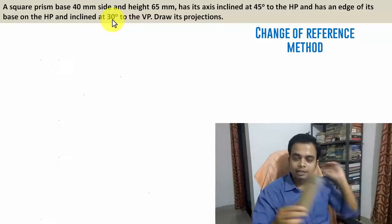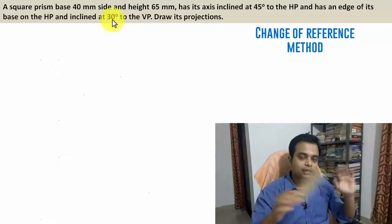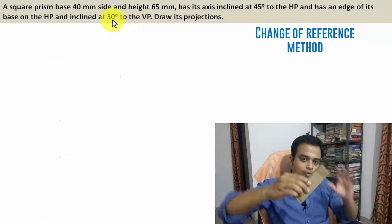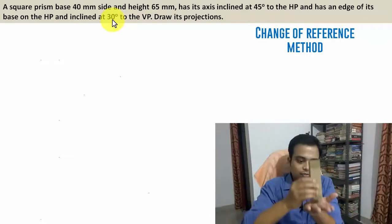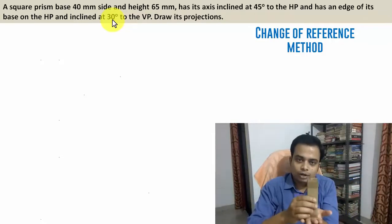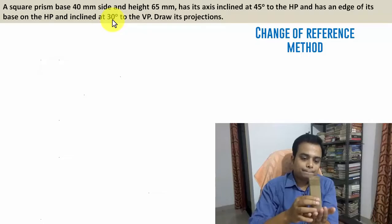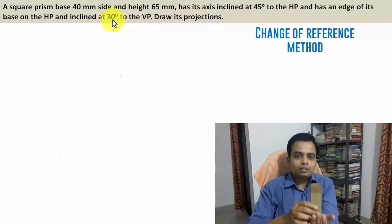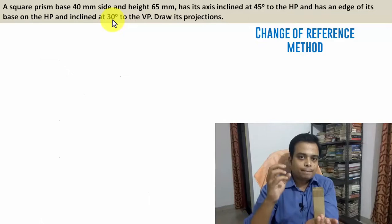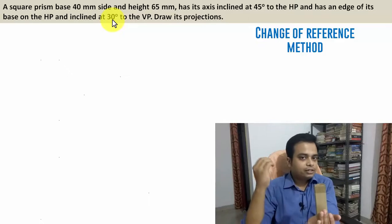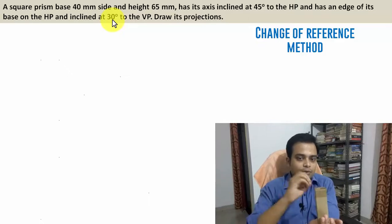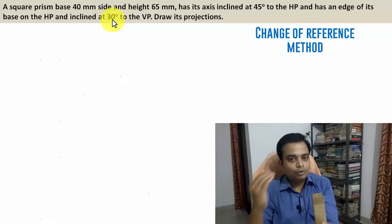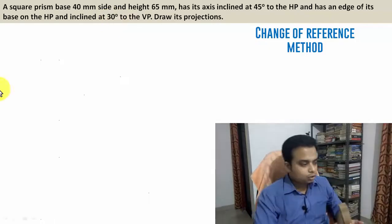Our initial assumption completely depends on the axis inclination. Here the axis is inclined to the horizontal plane, so our initial assumption for step one is that the entire solid is resting with its base on HP. The true shape can only be seen from the top, therefore we have to begin by making the top view first.